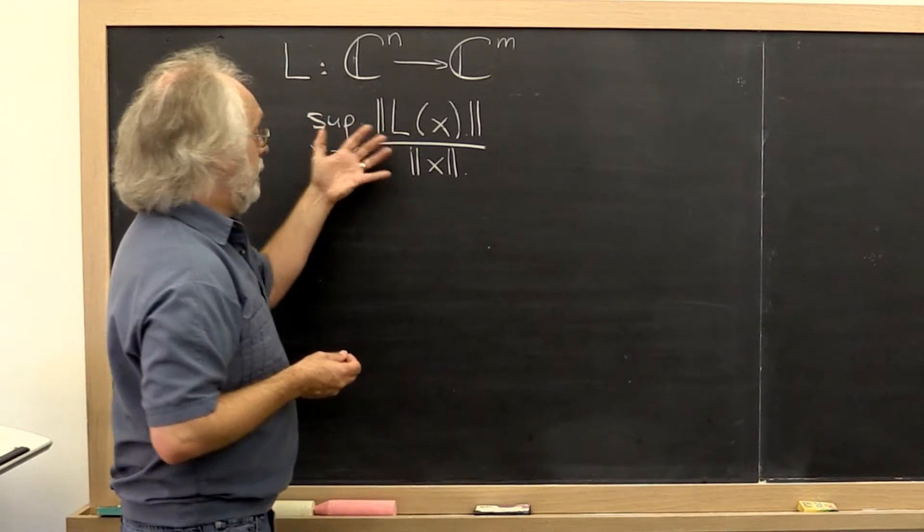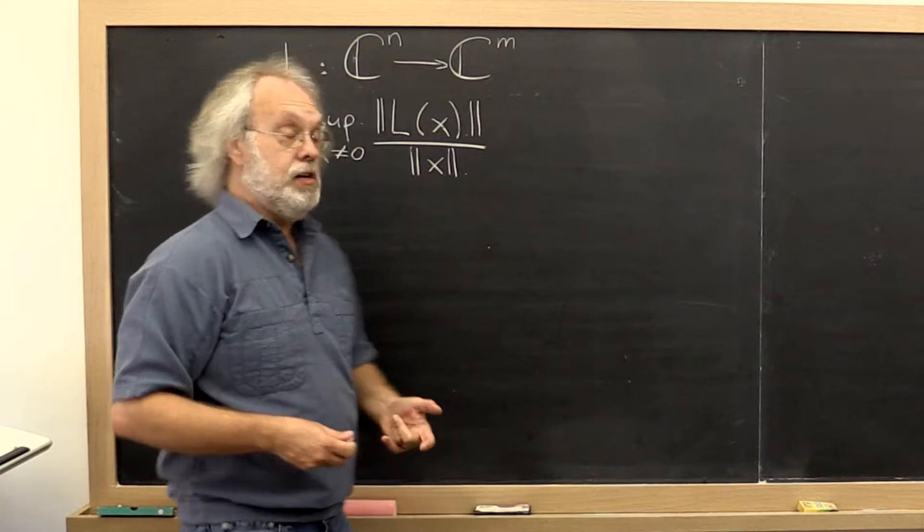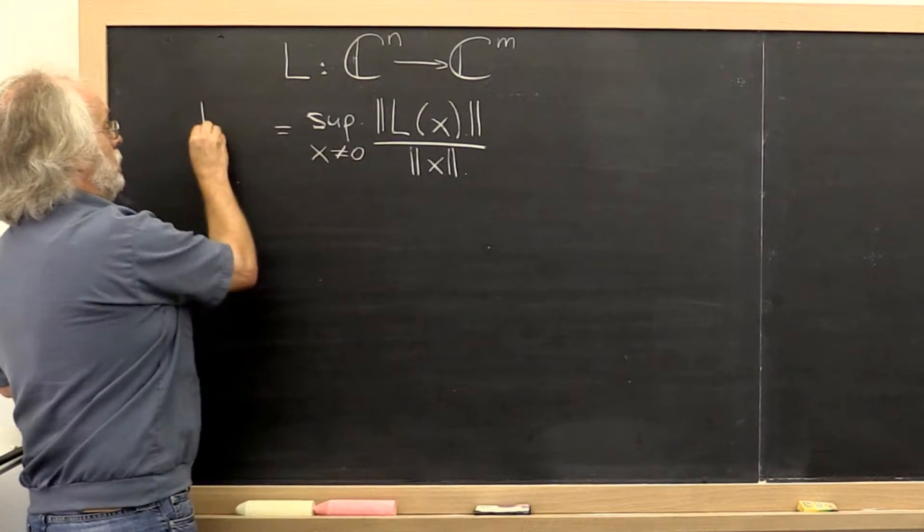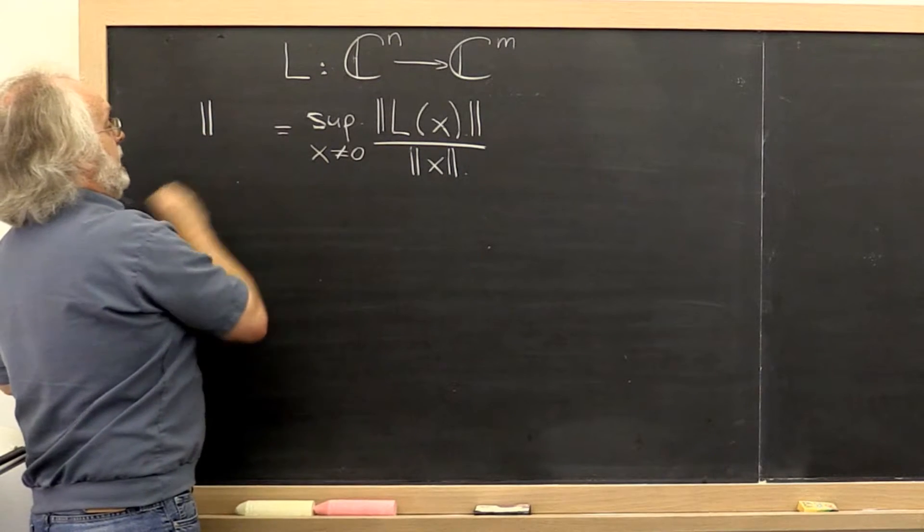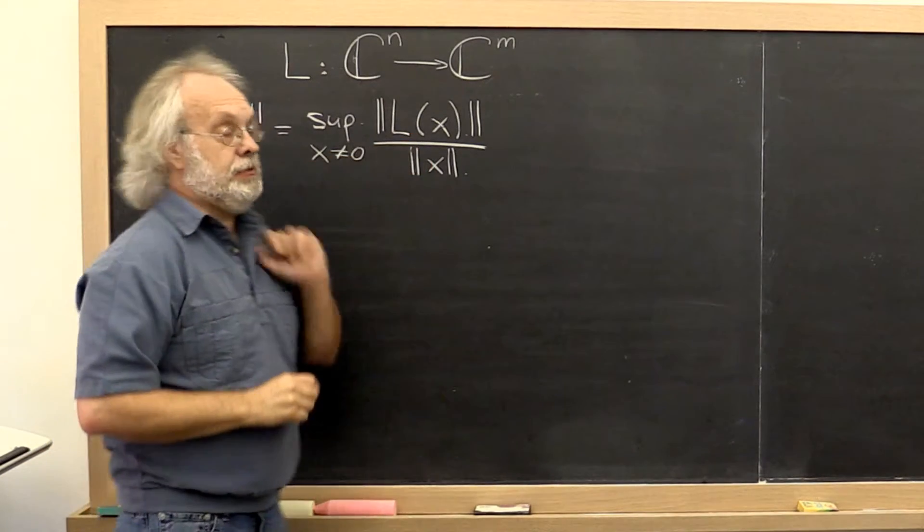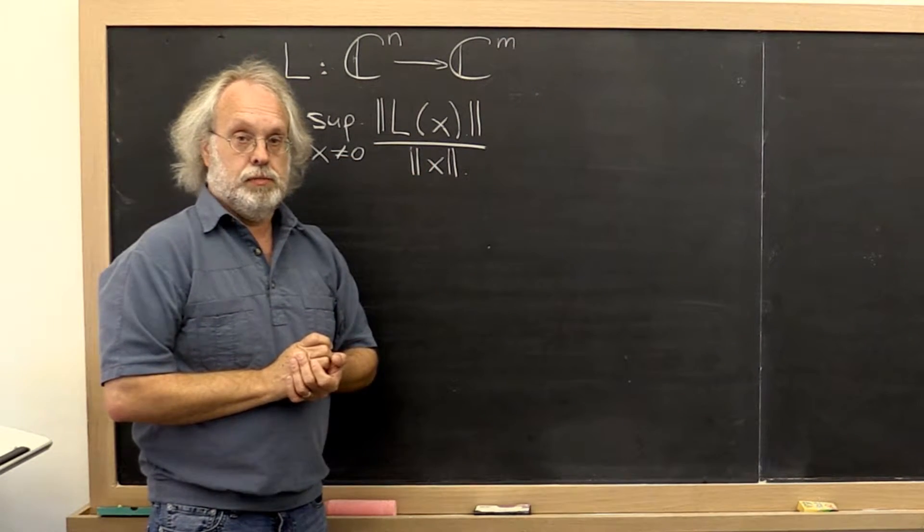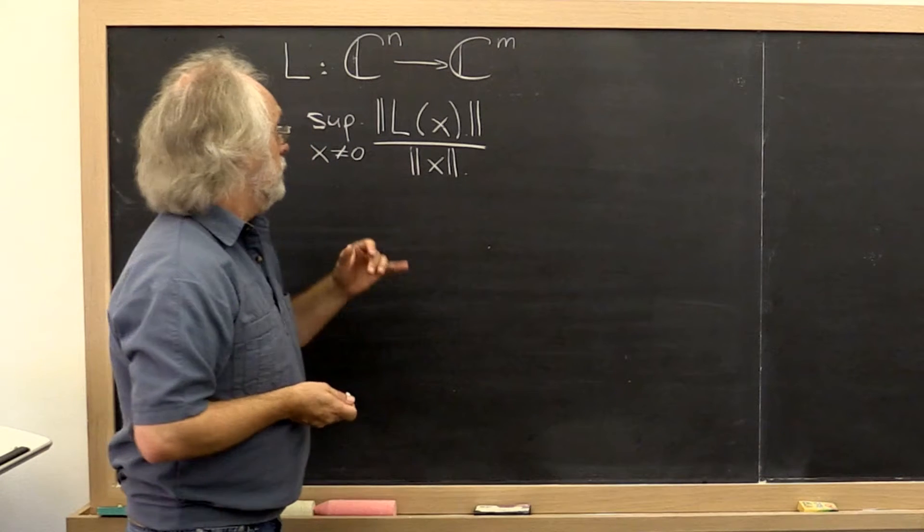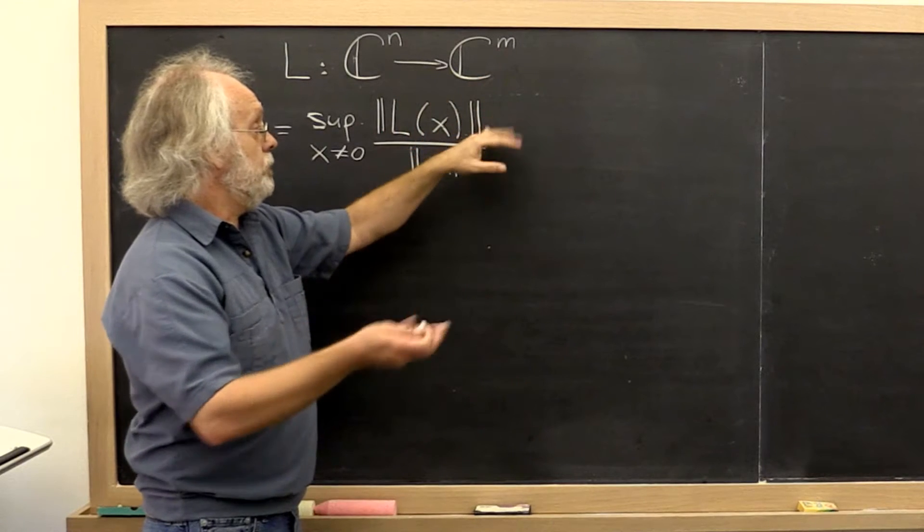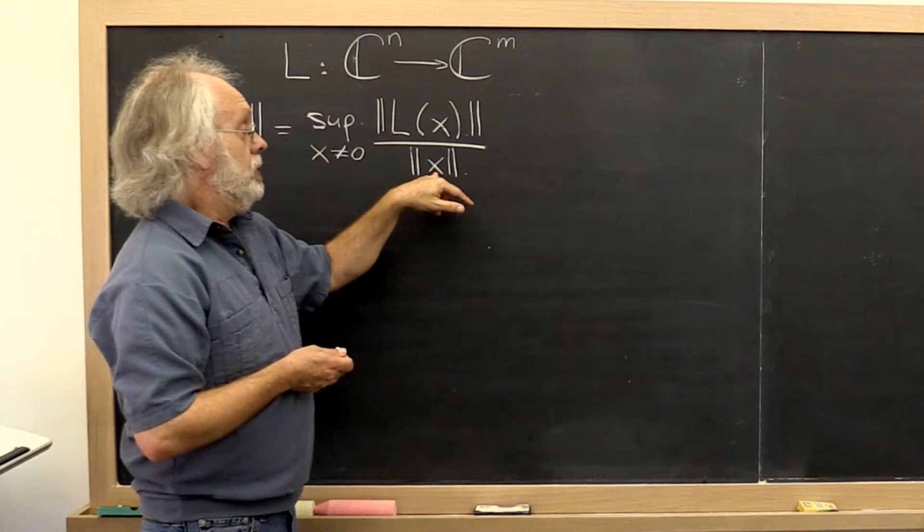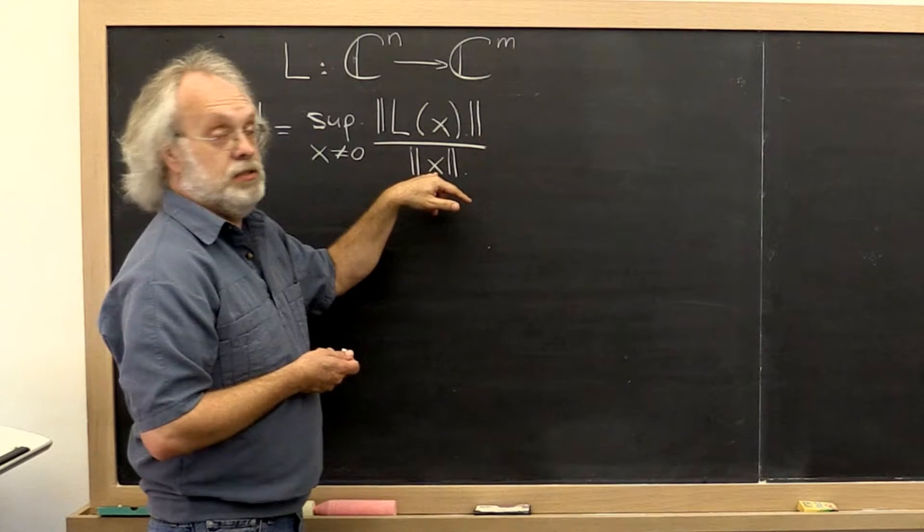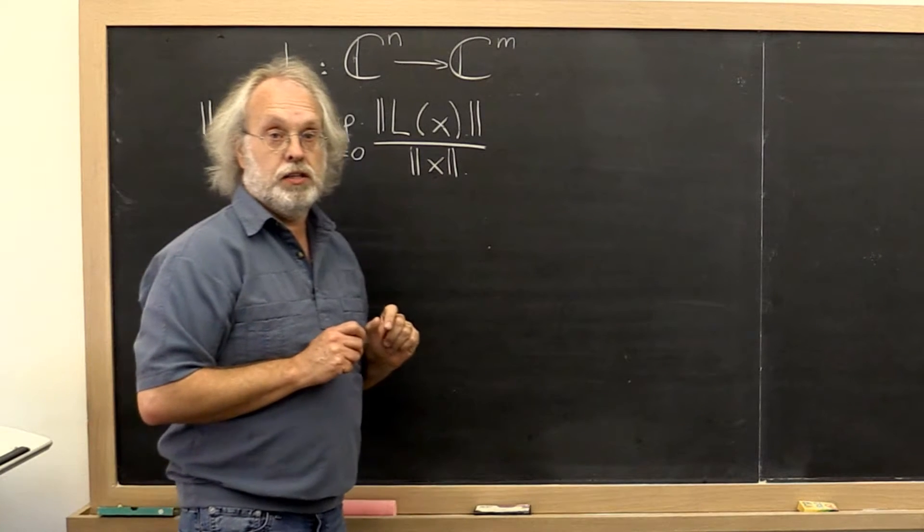And now we have a definition of stretching. And we might want to say, maybe what we should do is make the norm of L defined by this. Now, there are minor details here, of course. What norm do we use to measure the size of the output vector, the length of the output vector? What norm do we use to measure the size of the input vector? Those are little details and we work those out in the notes.